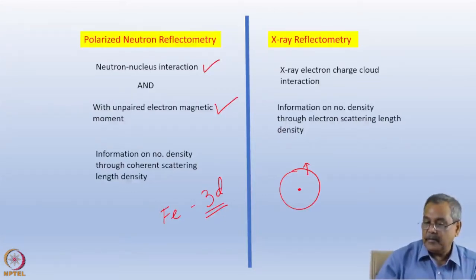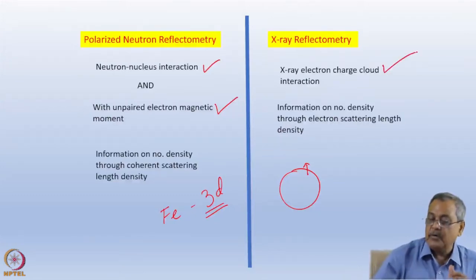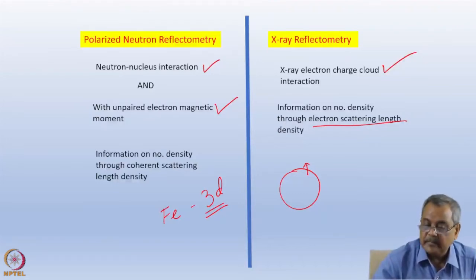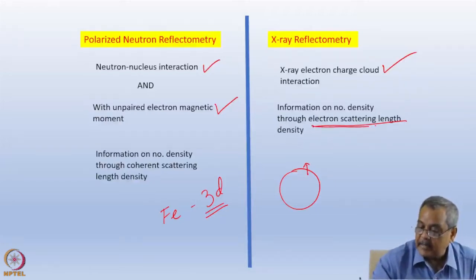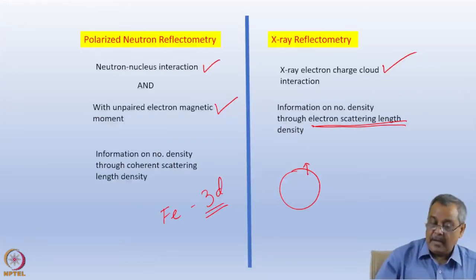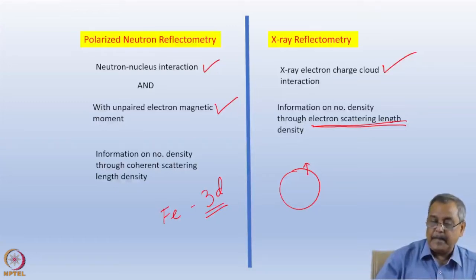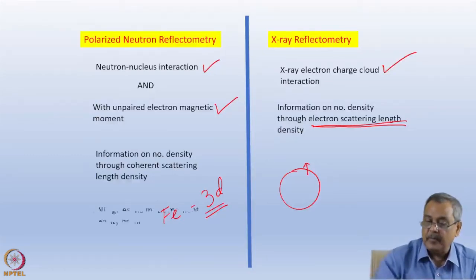From polarized neutron reflectometry. In the case of x-ray reflectometry, the interaction is between x-rays and the charge cloud, giving information on density through electron scattering length density. On the same sample, I can use coherent scattering length density from neutrons and electron scattering length density from x-rays — both translatable to physical density. This is a unique technique: using these two together, I can obtain the density of a medium with two elements, i.e., a binary two-component medium.